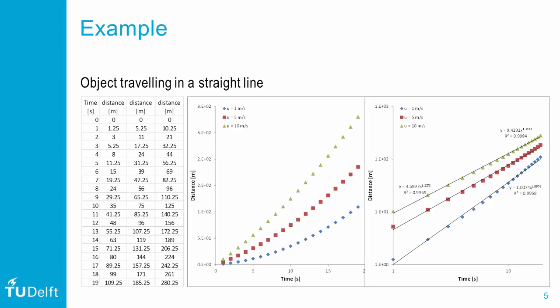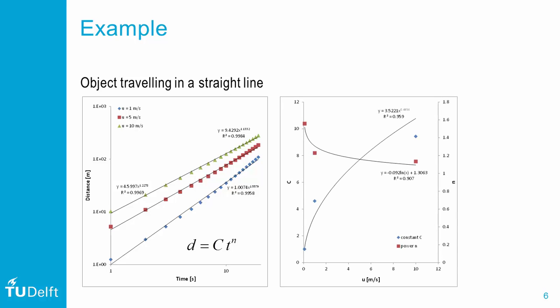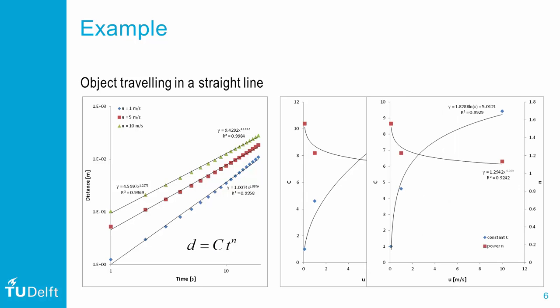There is an influence visible of the initial velocity, so let us call that the initial velocity effect. Now to get to a prediction model we can generalize the power law function to this simple equation, in which both the capital C and the exponent n are a function of the initial velocity. So we plot both against the initial velocity and we get trend lines. Now the advantage of Excel is that we can evaluate different trend lines to find the best fit.